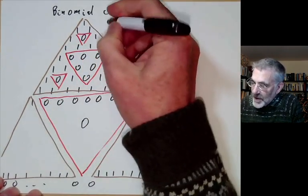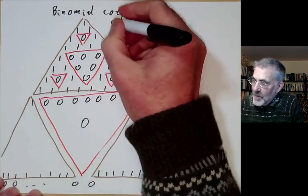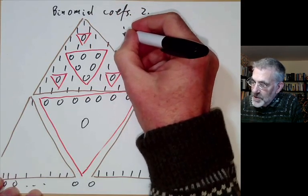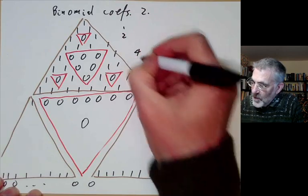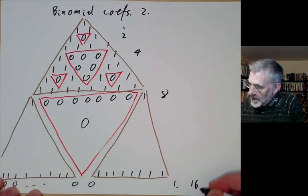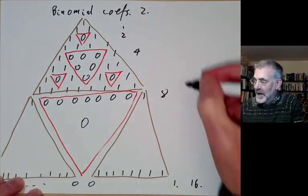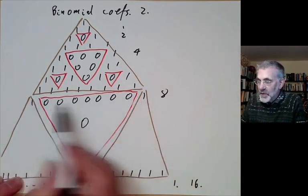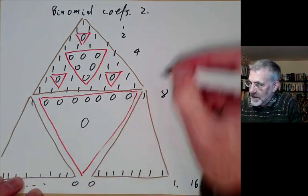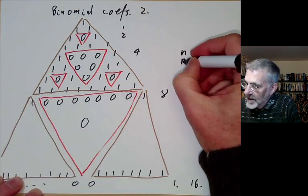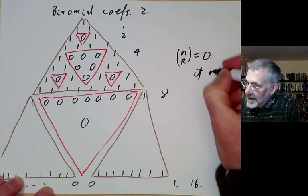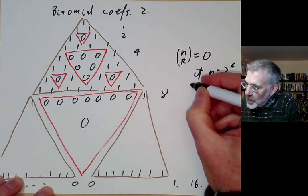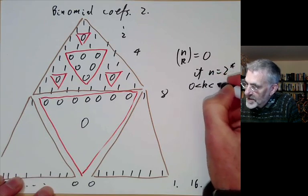We have to count rows in a funny way: this is row zero, row one, row two, row four, row eight, and row sixteen. These are just powers of two, so whenever the row is a power of two, almost all the coefficients are vanishing. This says that C(n, k) = 0 if n is a power of two and 0 < k < n.